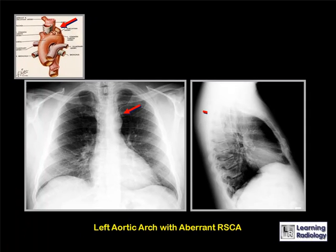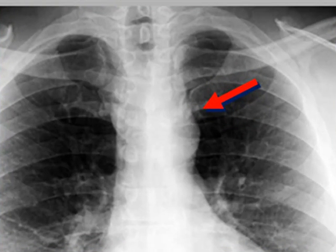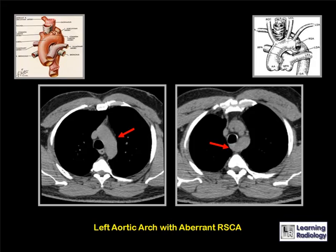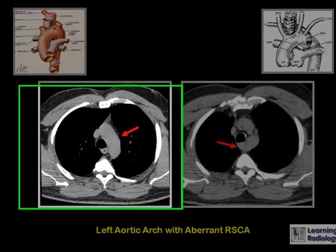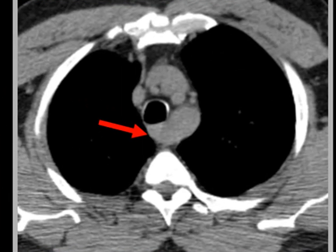This is what a left aortic arch with an aberrant right subclavian artery can look like. On a frontal chest examination, the red arrow is pointing to the oblique shadow just superior to the aortic knob. On the lateral view, the trachea and esophagus will be displaced forward. On CT scan, you can see the aberrant right subclavian artery passing posterior to the air in the trachea and pushing it forward.